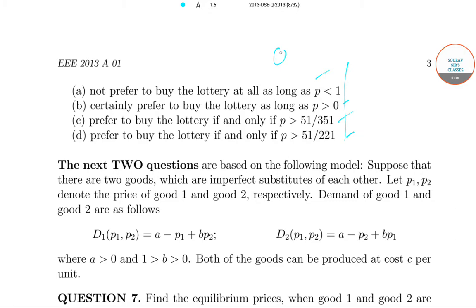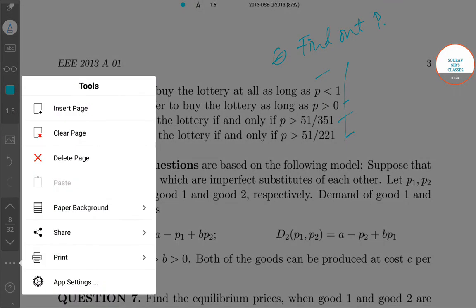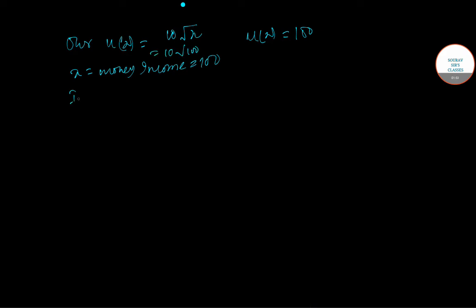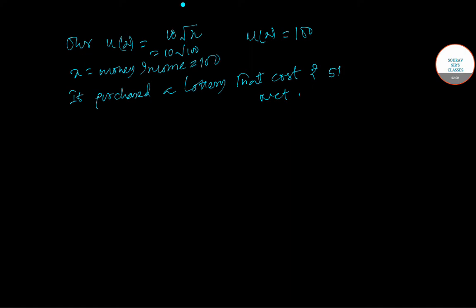Essentially we have to find out the value of p, so let's solve the problem. Our utility function is 10 times root of x, and x is our money income which is 100, so our utility function will have a value of 100 because it is 10 times root of 100. If she purchases a lottery that costs 51, the net amount is 100 minus 51, which is 49.